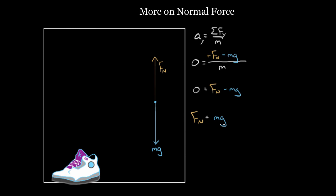Normal force is only equal to mg in this case because those were the only two forces. Look at the assumptions we made: only two forces were the normal force and the gravitational force, and we assumed the acceleration was zero. If you relax any of those requirements, the normal force is no longer going to be equal to mg. And it was on a horizontal surface — if you relax that requirement, you could have normal forces in the x direction. So let's, one point at a time, try to relax some of these requirements and see what that does to the normal force.